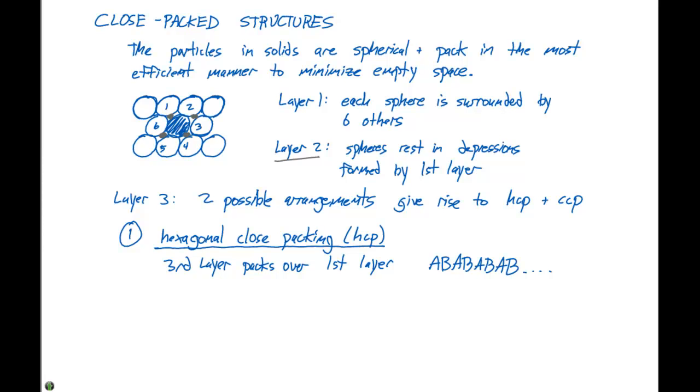So, our first layer is just like drawn here with the six spheres surrounding each other. The second layer has these gray spheres go right in the depressions of that first layer. Then, the third layer packs on top of that directly above layer number one. So, we call that AB, AB, AB packing.